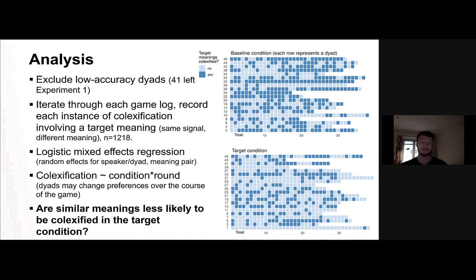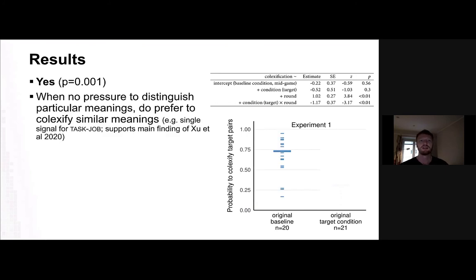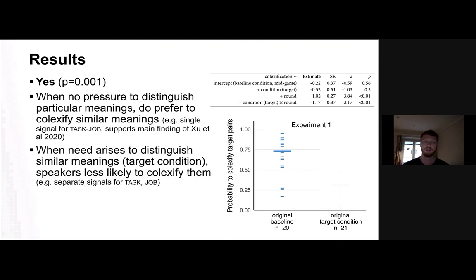What we're asking is: are similar meanings less likely to be co-lexified in the target condition? Because in the target condition, participants have actual communicative need to distinguish them — so they shouldn't want to co-lexify. The answer is yes. In experiment one there is a difference between conditions. In the baseline condition, when there is no need to distinguish particular meanings, participants prefer to co-lexify similar meanings like task and job, supporting the main cross-linguistic finding of Shuerdahl 2020. But in the target condition, when need arises to distinguish similar meanings, speakers are indeed less likely to co-lexify them.